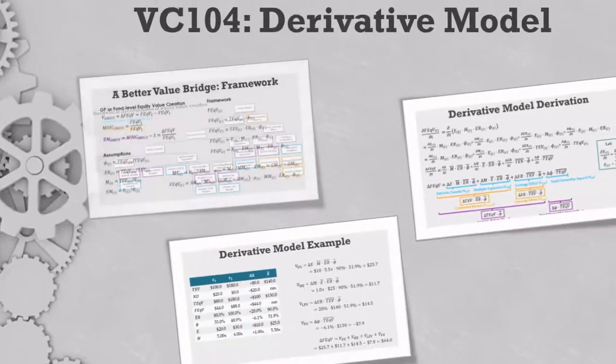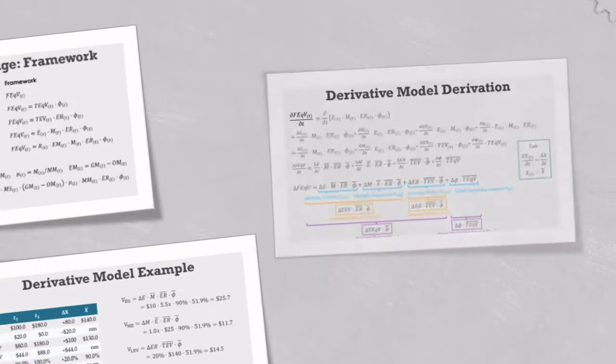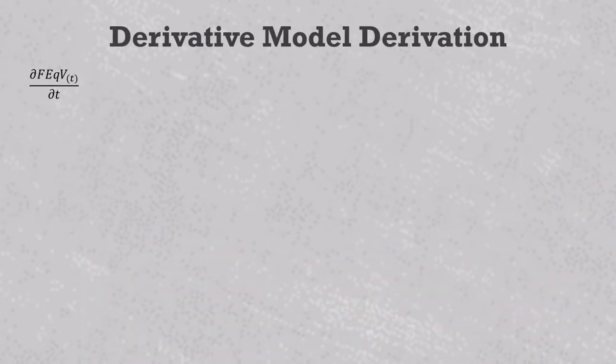So to build this, let's go back to the fact that fund equity value is a function of time. The instantaneous change in fund equity value can be described by a time derivative like this one here. And then we can start with a four-term expression that has EBITDA, valuation multiple, equity ratio, and phi. Now all of these are also functions of time. So in order to differentiate them, we need to go back to Calc 101 and remember something called the product rule.